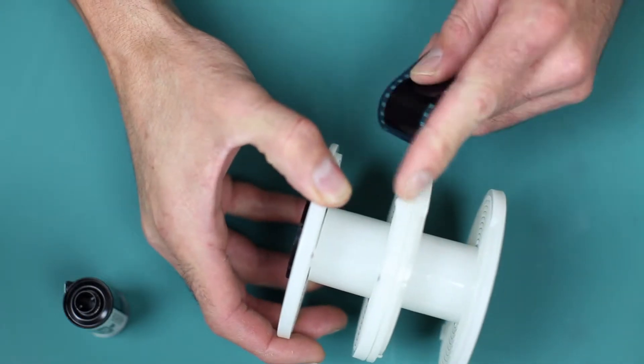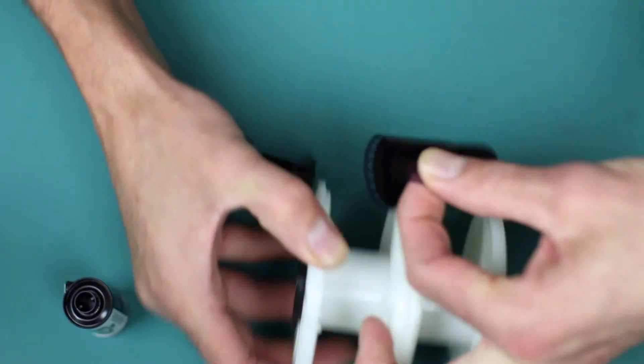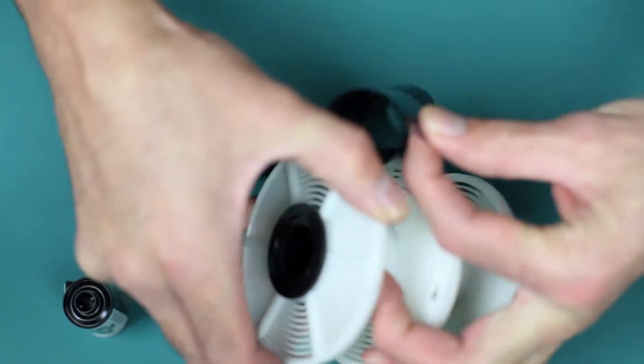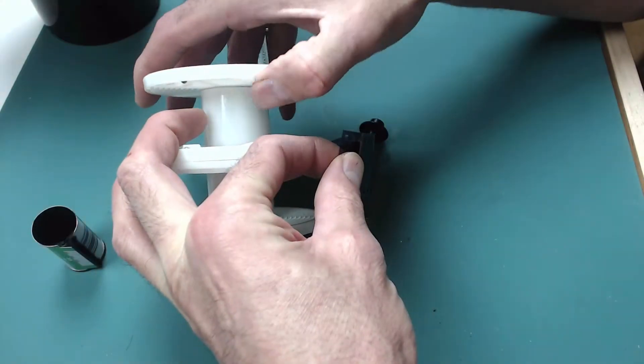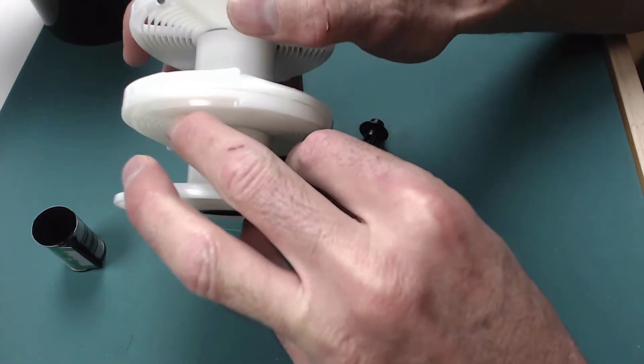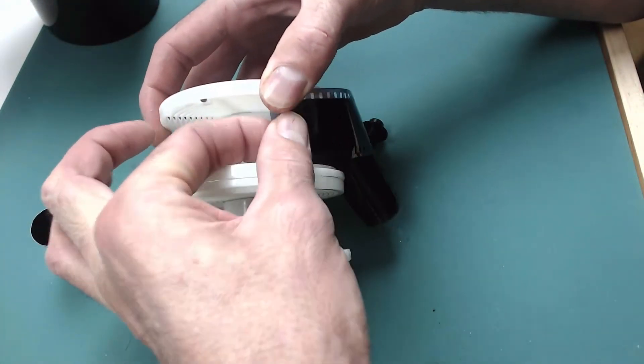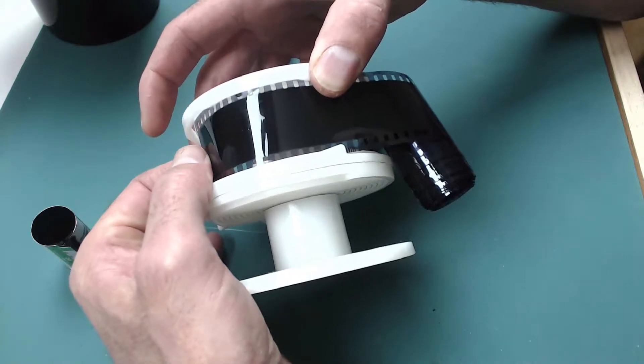The way that I find this slot in order to feed the film in is I put my thumb and forefinger at the end of the film. I put my other thumb on the opening to the spiral which has got a slightly raised edge, and I bring my thumbs together. I know that when my thumbs are together, I'm at the beginning of the slot.